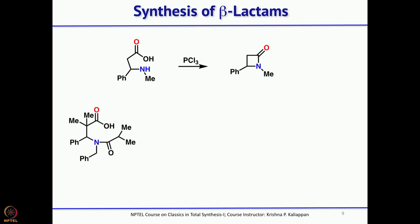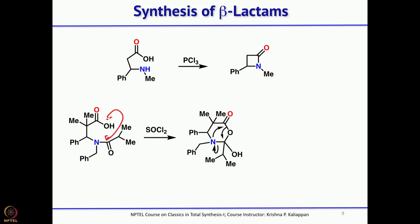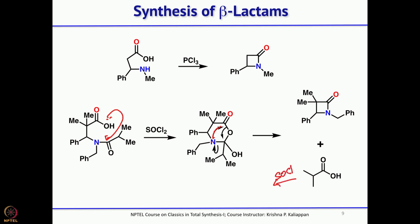PCl₃ gives the beta-lactam directly. If you protect the nitrogen and then treat with thionyl chloride, the carboxylic acid can intramolecularly attack the amine. The nitrogen lone pair attacks the carbonyl intramolecularly and rearranges to give a 4-membered lactam. SOCl₂ is still present, so the intermediate goes on to the corresponding acid chloride. So you can use PCl₃, SOCl₂, or CH₃COCl — just do not heat it, or you will get the amine and alpha,beta-unsaturated carboxylic acid.